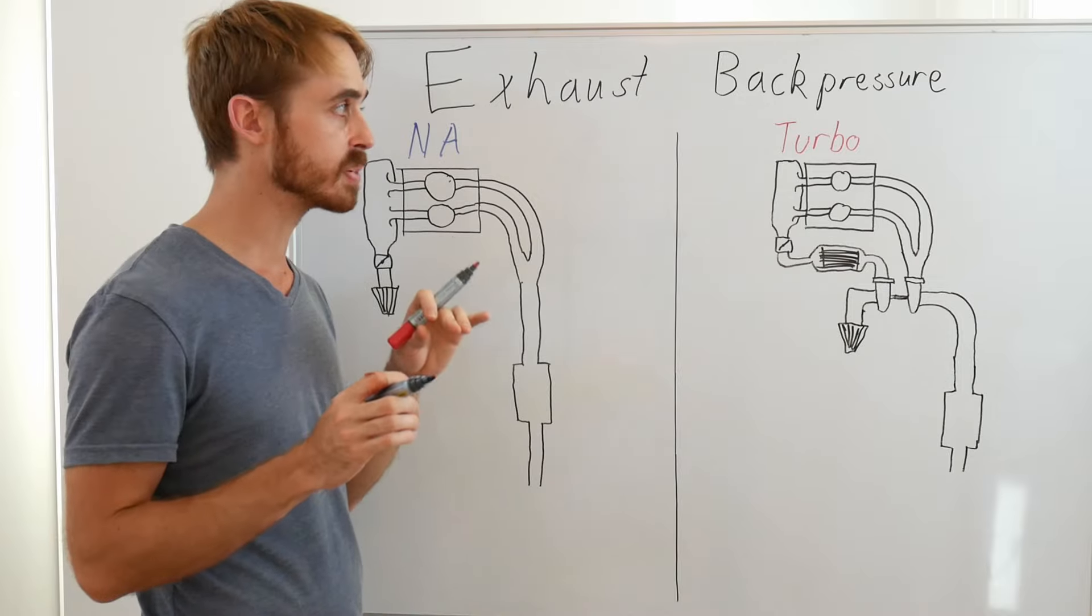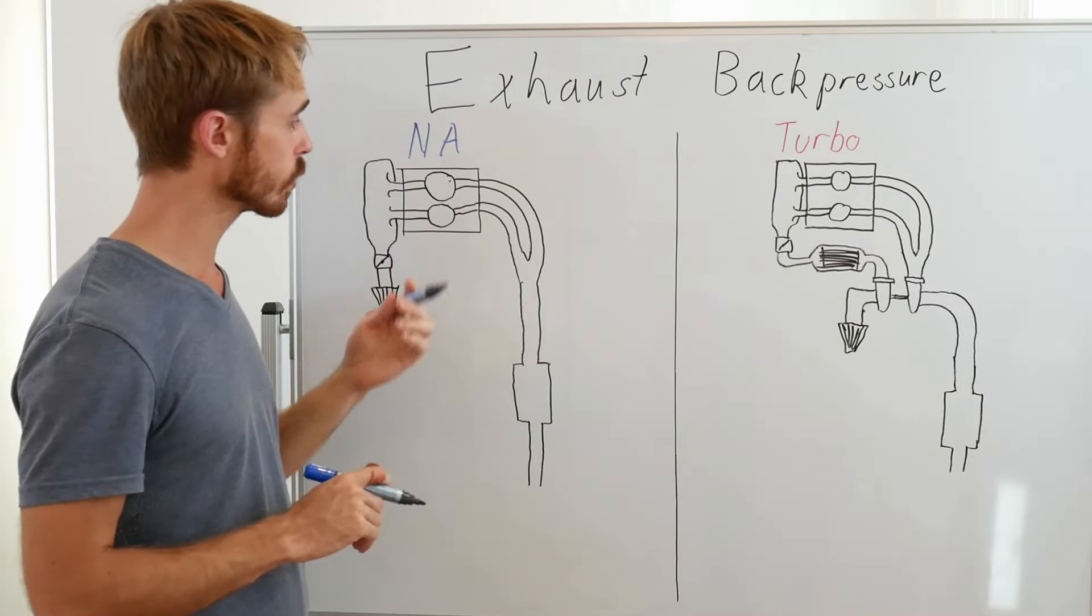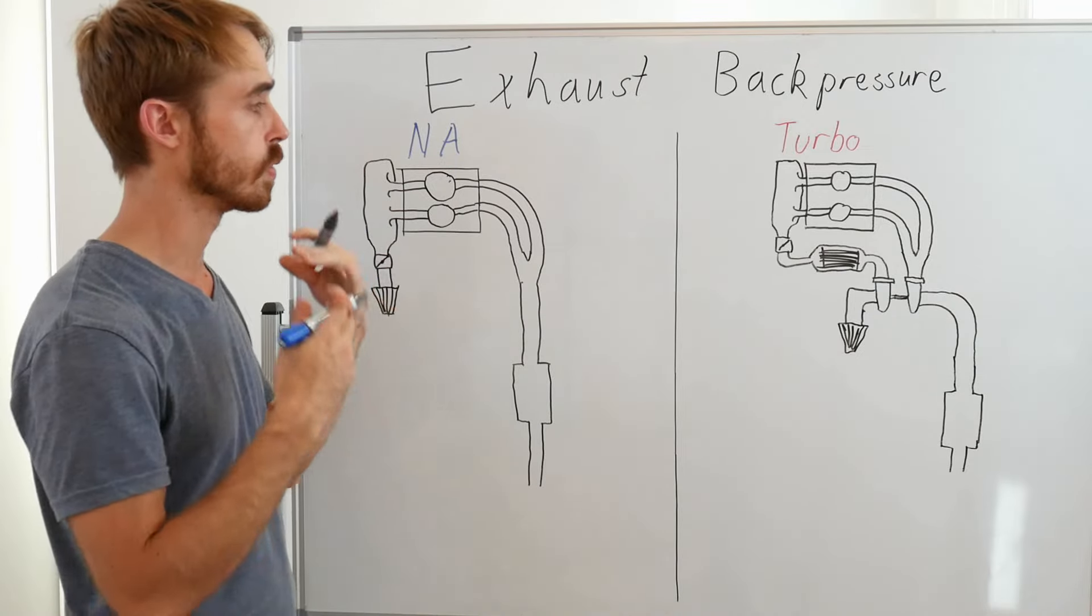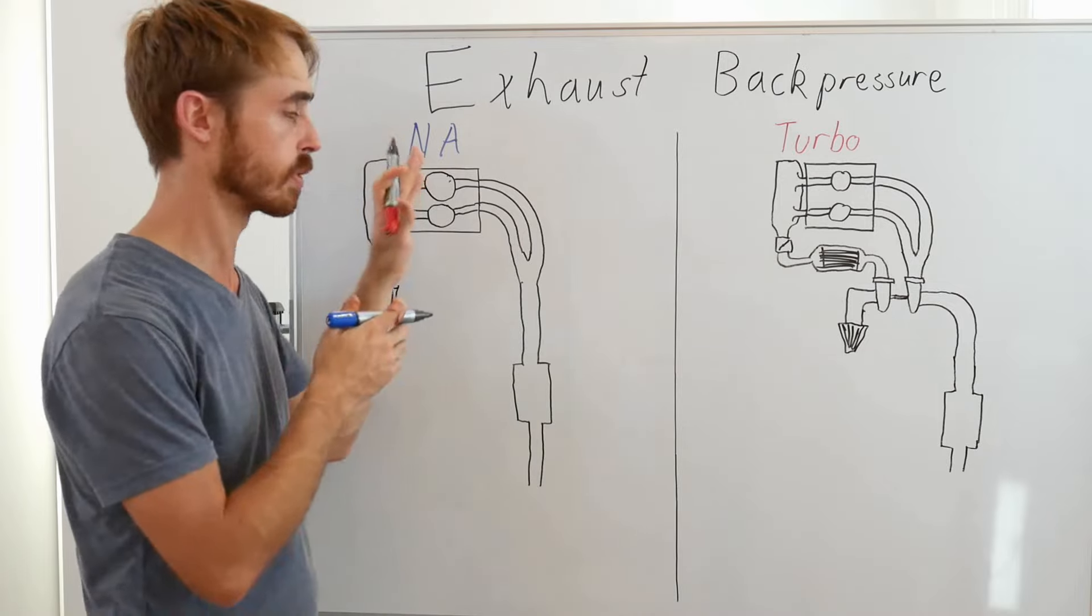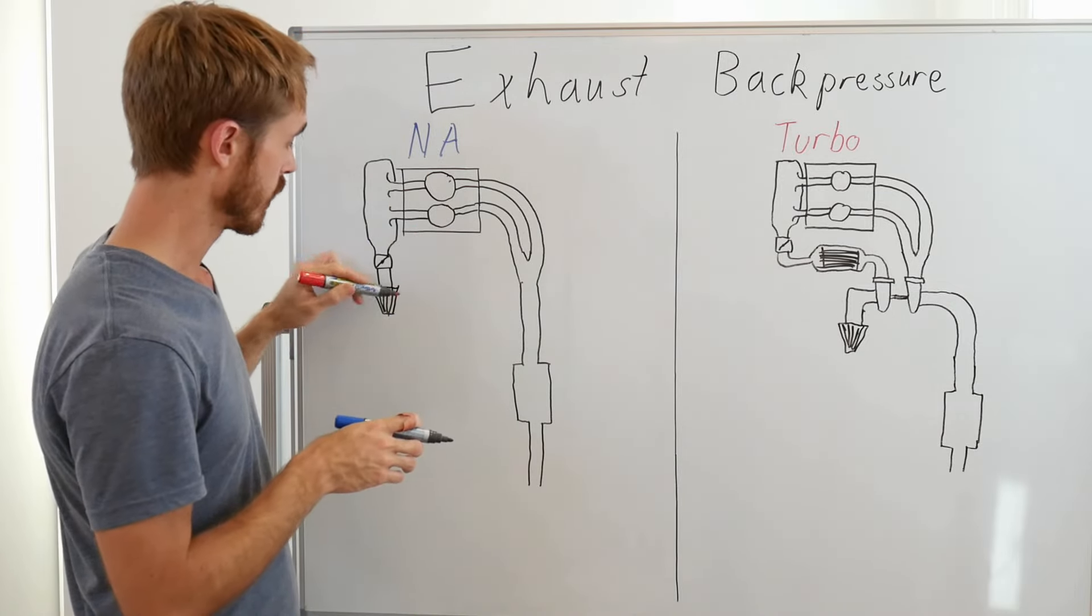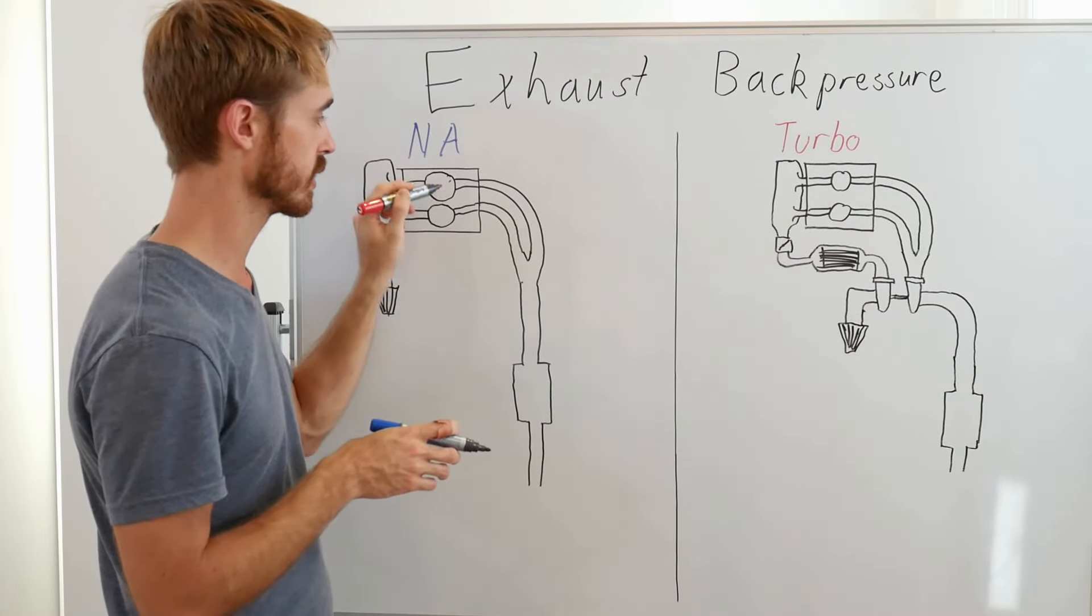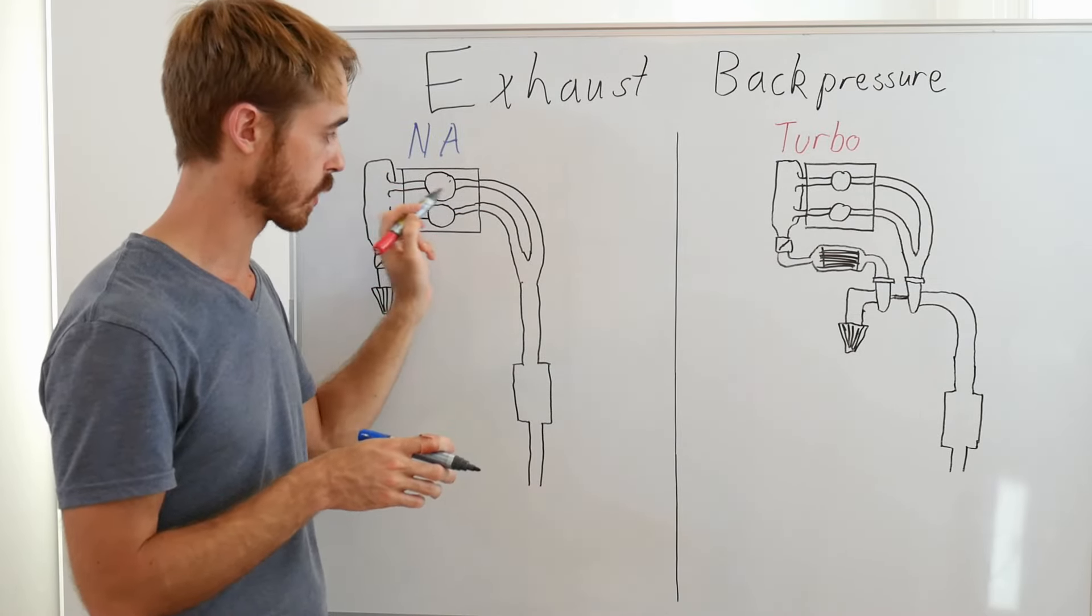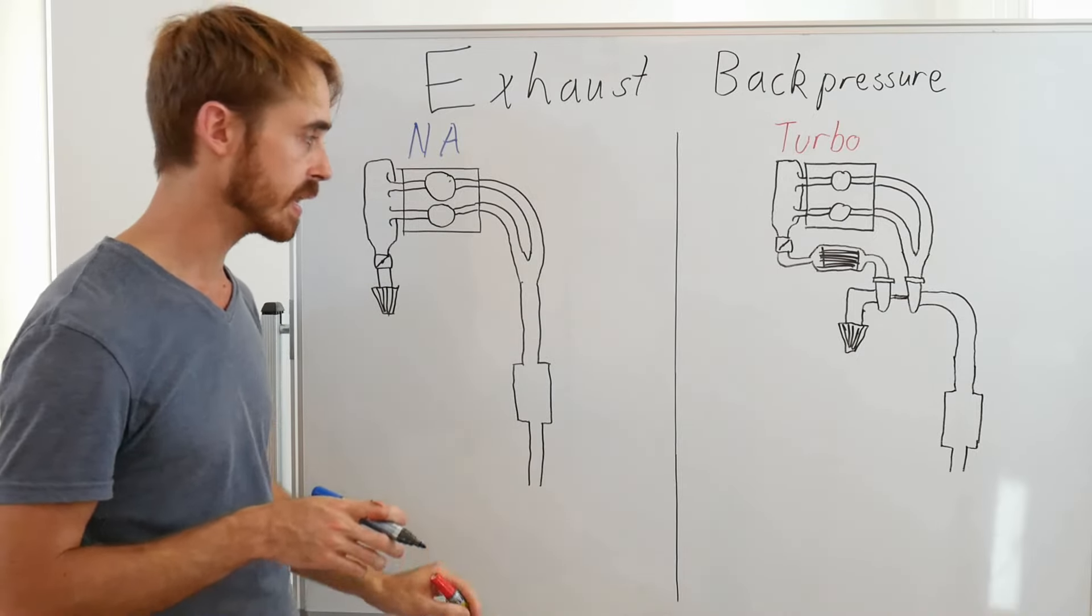To start off with, let's keep it simple and go on the naturally aspirated case. So what I've drawn for you here today is a basic representation of a naturally aspirated engine. It's a two cylinder engine just because I wanted multiple cylinders but didn't want to go really complex on the drawing. We have air filter, throttle body, intake plenum going into the two cylinders, exhaust valve going out down into a collector and down into the full exhaust with the muffler down here.